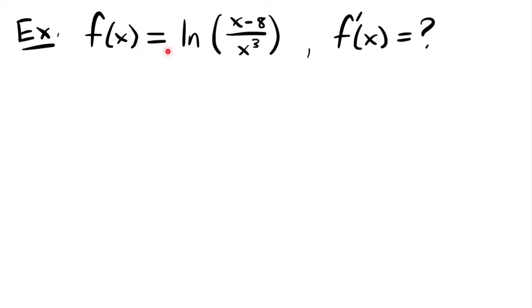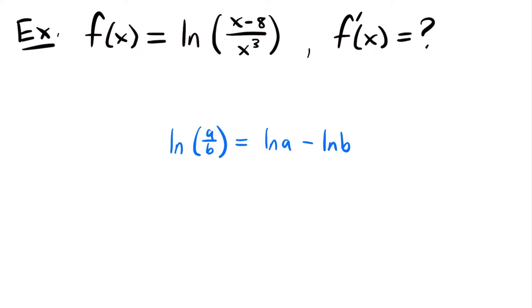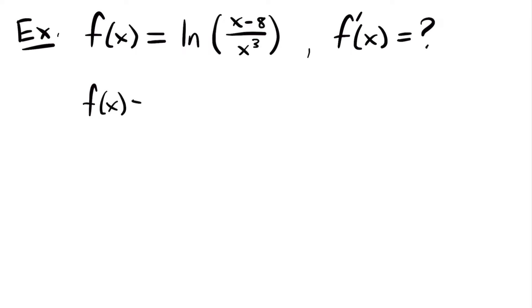For our next example, f(x) equals the natural log of (x minus 8) divided by x cubed, and we want to find f prime of x. We have a natural log of a quotient, so we use the property that ln(a/b) equals ln(a) minus ln(b). Splitting the function, f(x) equals the natural log of (x minus 8) minus the natural log of x cubed.